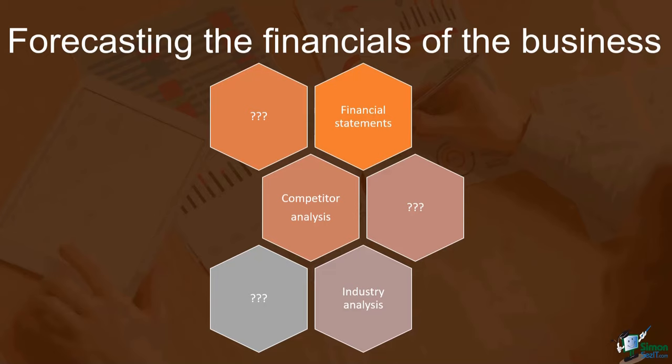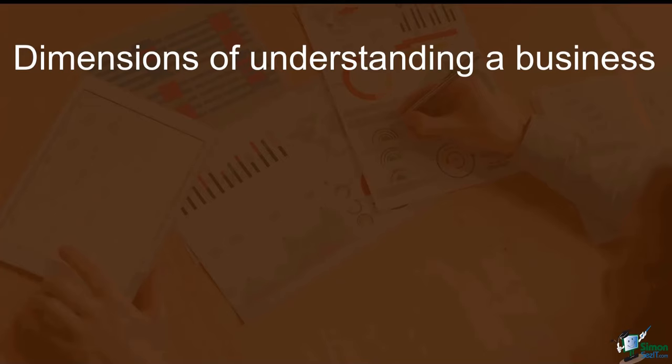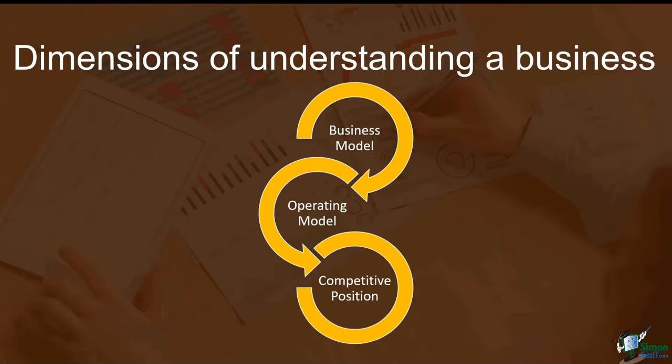A business is a complex web of people, processes, ideas, history, money, and so much more. I prefer to use a method called the three dimensions of business understanding. These three dimensions don't so much break down and categorize the business — they tell the inside story of the business. They expose the essence of the business and what makes it unique. The three dimensions of business understanding are the business profit model, the operating model of the business, and the competitive position.